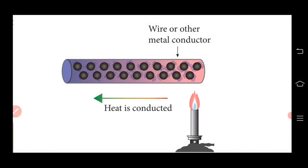In conduction, heat energy transfer takes place between two ends of the same solid, or through two solid substances that are at different temperatures but in contact with one another. When a solid substance is in contact with heat, the heat energy transfers from one end of the conductor to the other end. Conduction is defined as the process of heat energy transfer in solids — from the region of higher temperature to the region of lower temperature — without the actual movement of atoms or molecules.